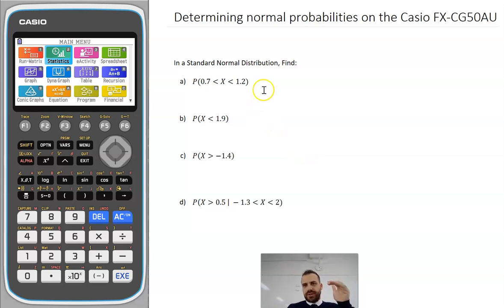We're going to be determining normal probabilities on the Casio FX-CG50AU calculator. In a standard normal distribution, remember a standard normal distribution has a mean of 0 and a standard deviation of 1.